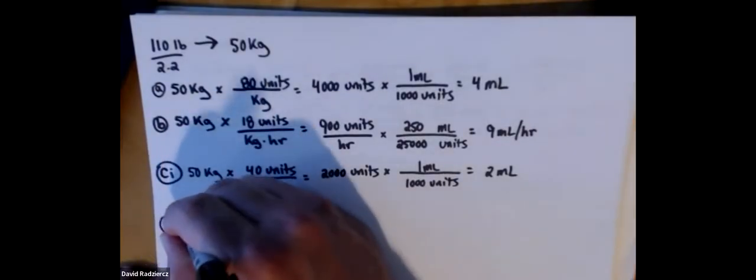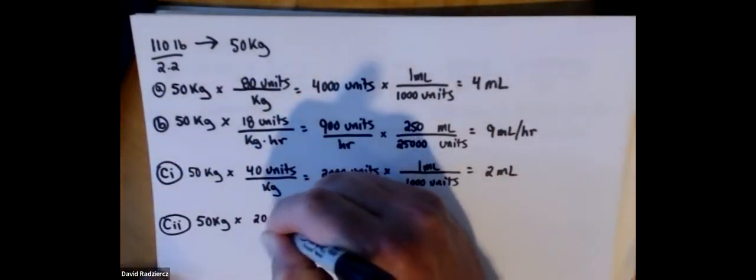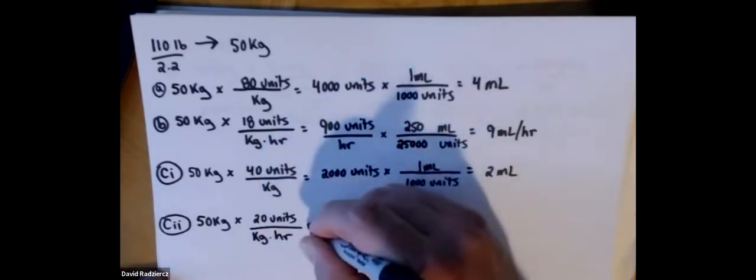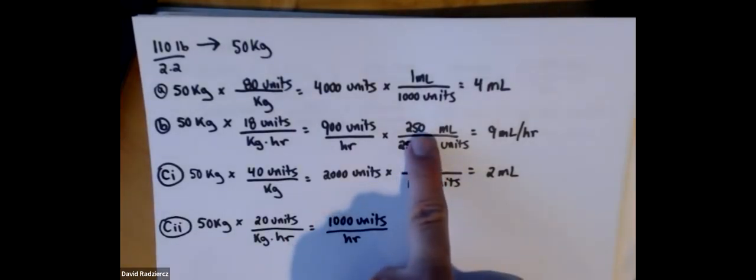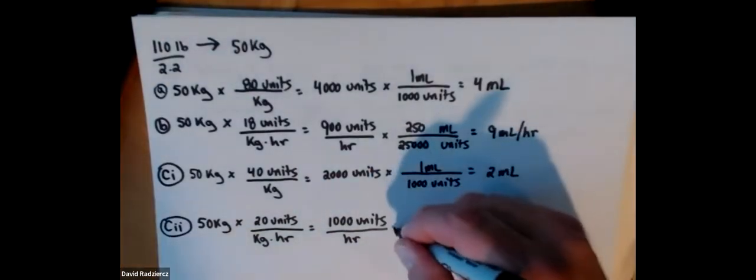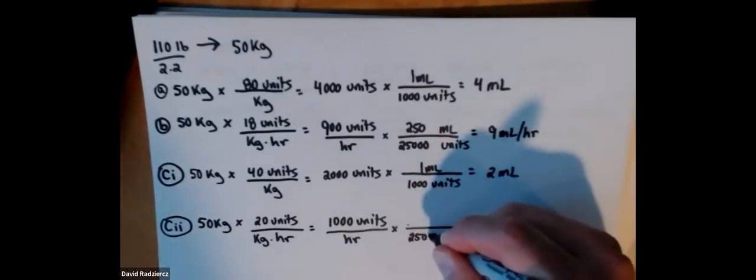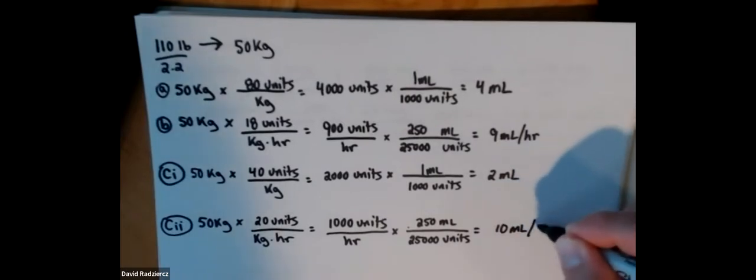Part C2 — same patient weight, but now we increase to 20 units per kilogram per hour. 50 kilograms times 20 gives 1,000 units per hour. Using the available 25,000 units in 250 milliliters half normal saline from the protocol, I get an answer of 10 milliliters per hour.